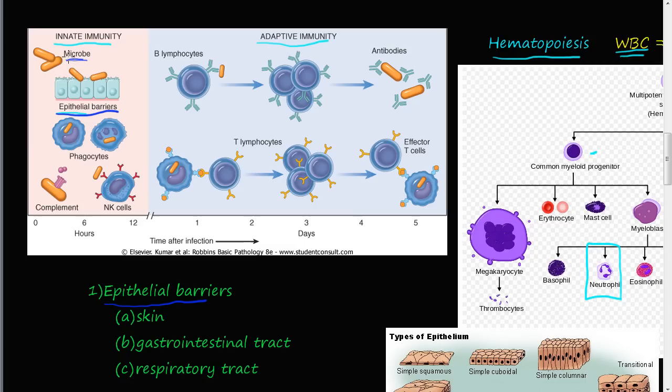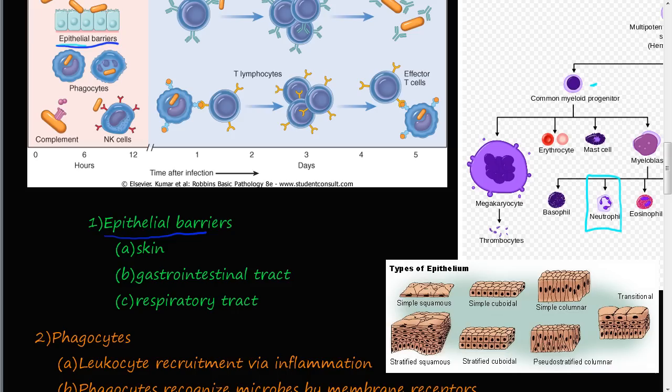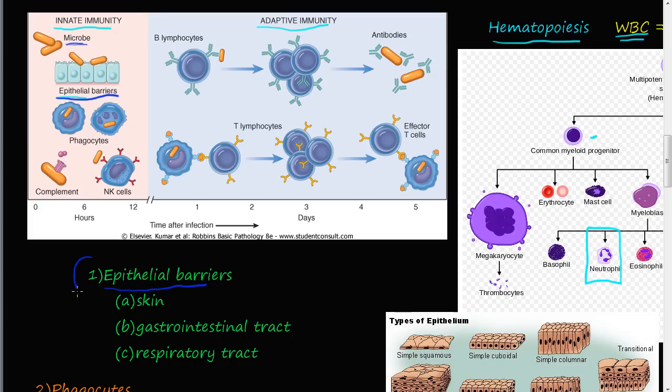Some types of epithelial layers include simple squamous, simple cuboidal, simple columnar, stratified squamous (which is our skin), stratified cuboidal, pseudostratified columnar, and transitional. If you're taking histology, you'll need to memorize all these. For our purposes, the first part of innate immunity is epithelial barriers: the skin, the gastrointestinal tract, and the respiratory tract.